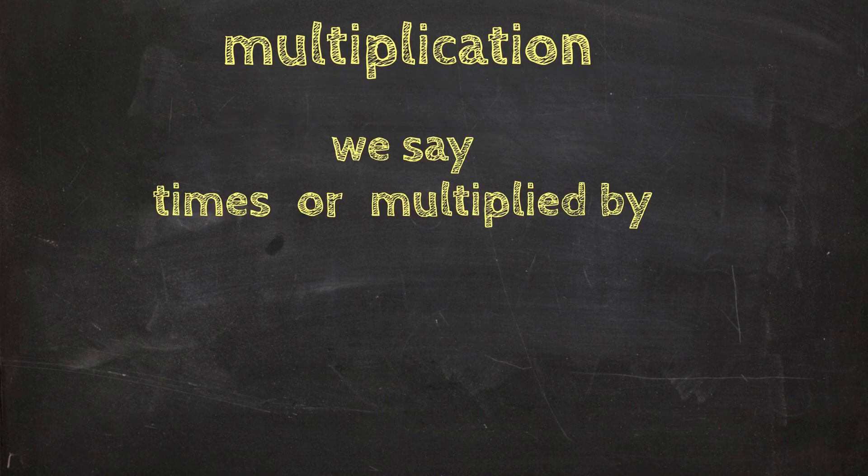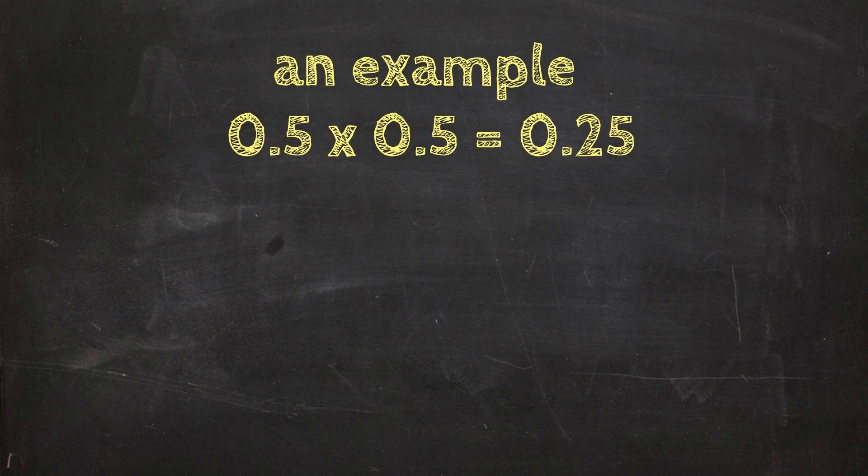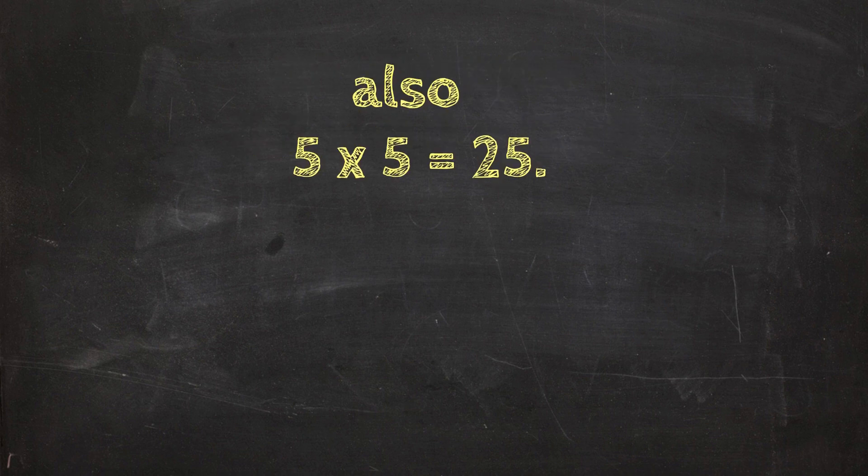In multiplication we say times or multiplied by. An example: 0.5 times 0.5 equals 0.25 or 0.25. We can also say 0.5 or 0.5 multiplied by 0.5 or 0.5 equals 0.25.